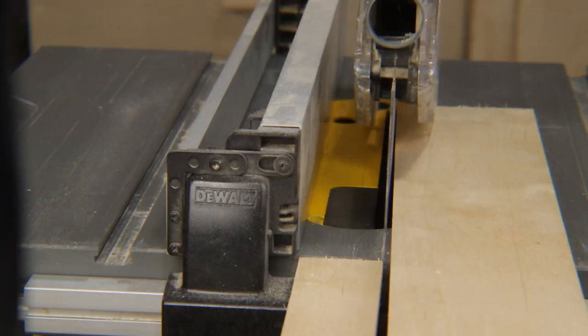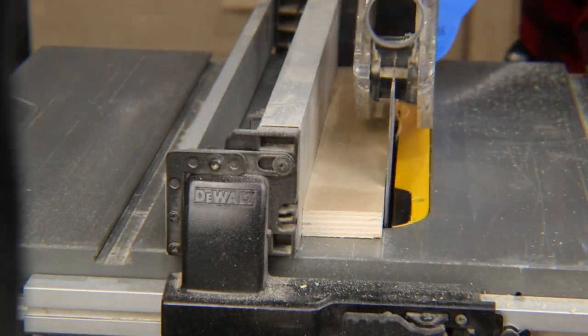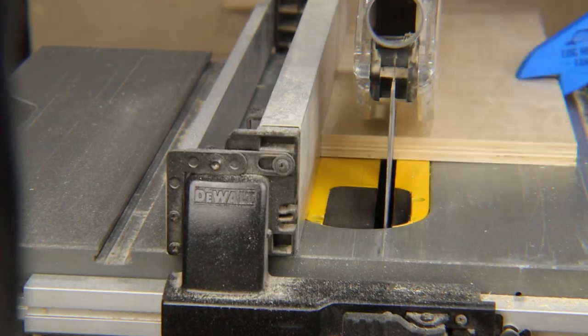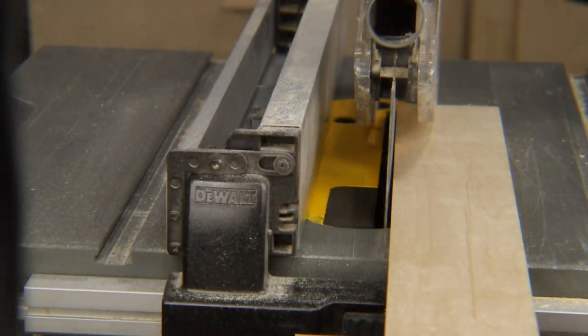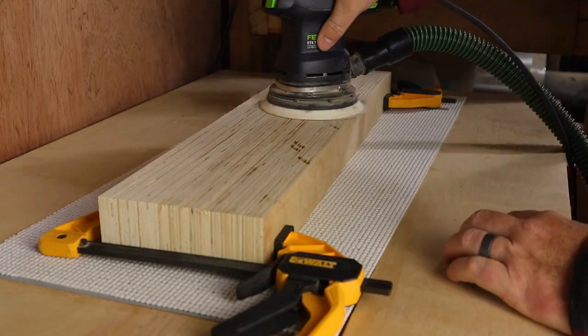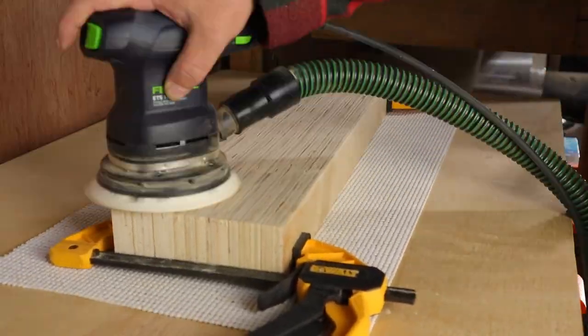Now I need to cut a bunch of strips for the doors. The door strips got a little scorched in the table saw, so I'm going to clamp them all together and sand them a bit. This will also help make sure they're all the same thickness.